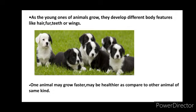As the young ones of animals grow, they develop different body parts and features like hair, fur, teeth, or wings. Here, two puppies or two chicks may have similar body parts, yet they look different. Also, one animal may grow up faster or be healthier compared to another animal of the same kind.